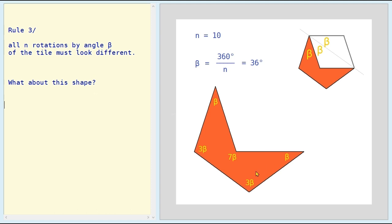So what about this shape? It's a bit of a strange-looking shape. If you take a pentagon, put a line through two vertices, and then fold over that part, you get left with this shape here. And you can show that these are the angles. For n equals 10, beta is 360 degrees divided by 10, which is 36 degrees. These are the angles of this shape.